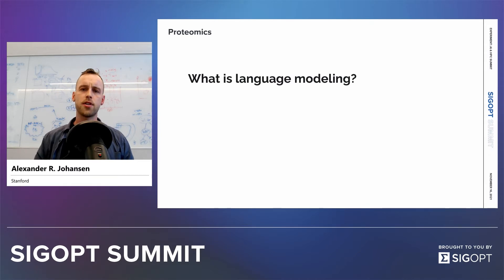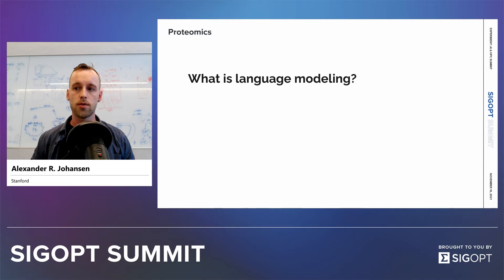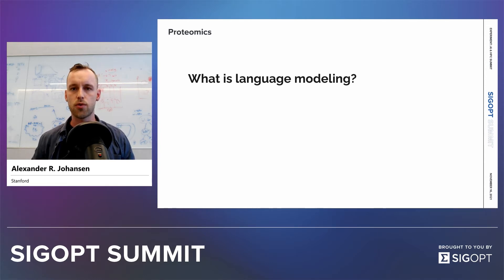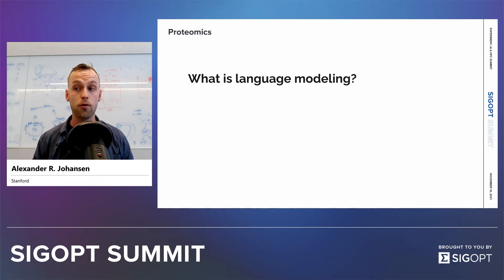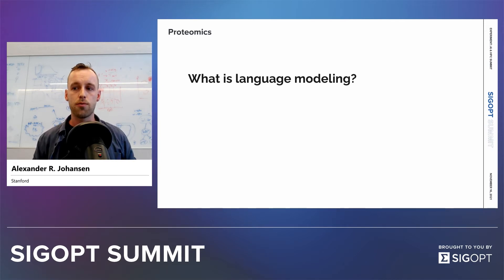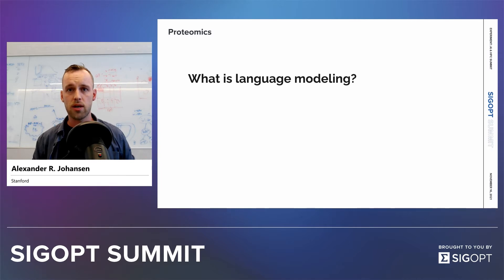The first inspiration we've been drawing from is natural language processing. How is this related to proteins? Let me take you through language modeling and what technologies we've been using, and how we've been able to transfer this for proteins research and achieve state-of-the-art performances. This is a classical example of taking something methods-oriented and applying it to a field like proteomics.